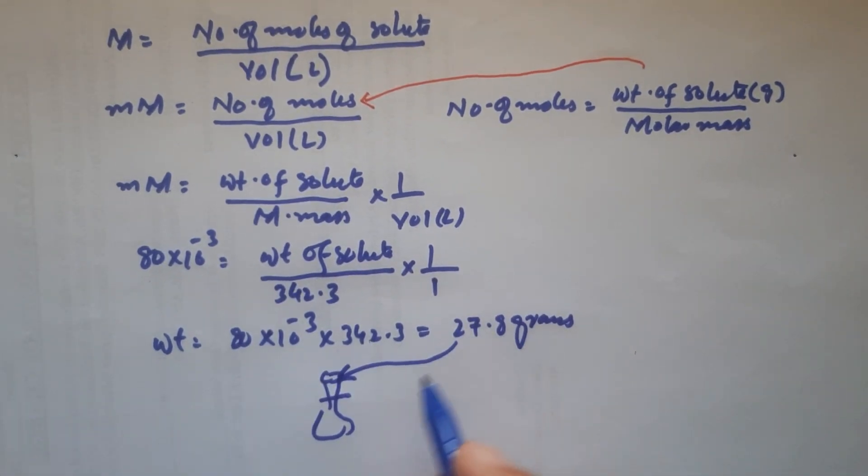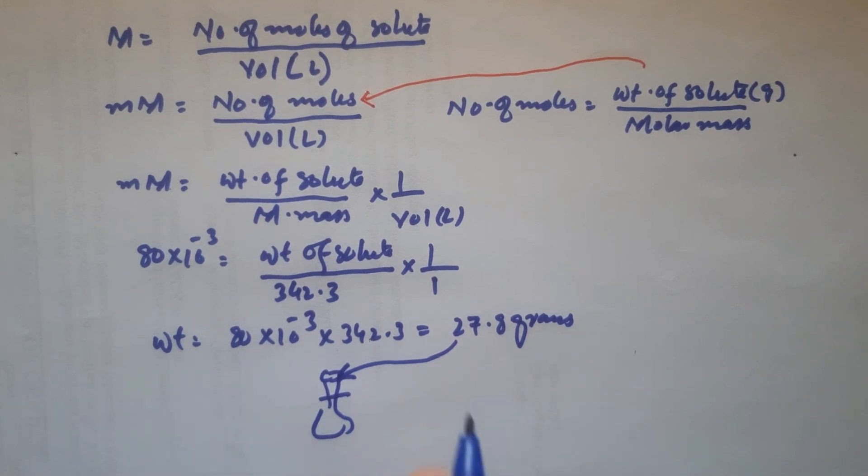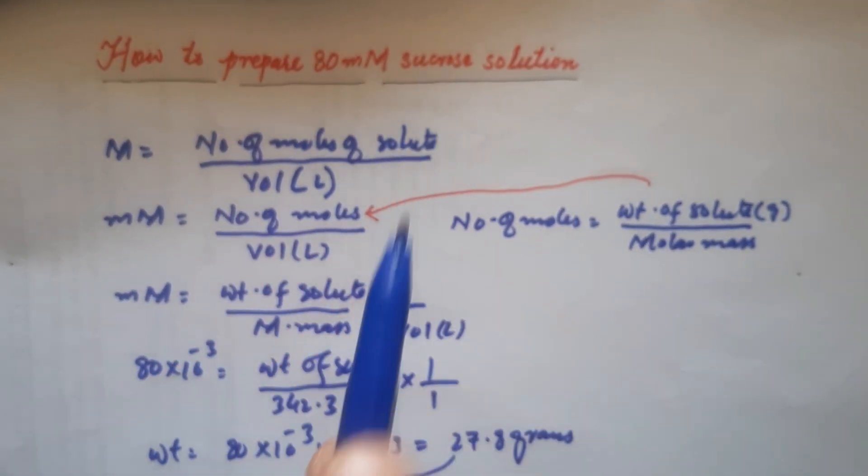Now you should take this 27.8 grams and dissolve it in 1 liter distilled water, and your solution of 80 millimolar is ready.